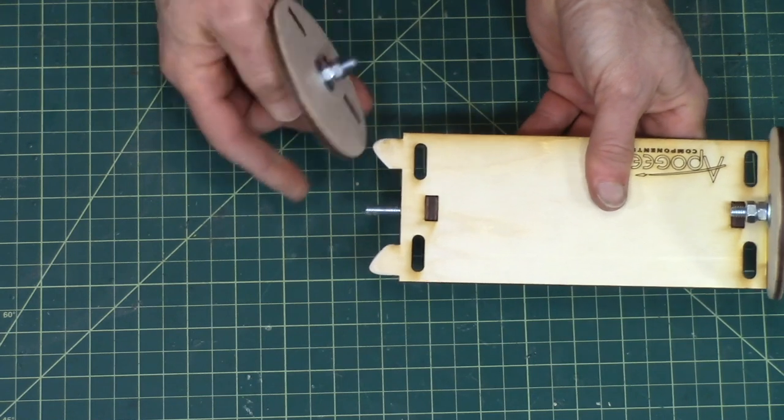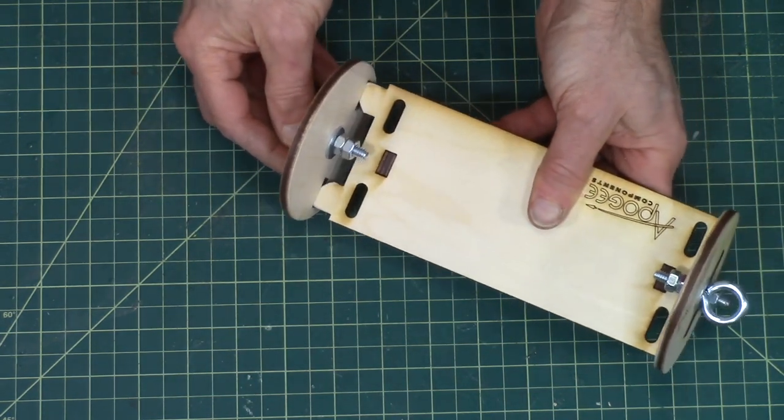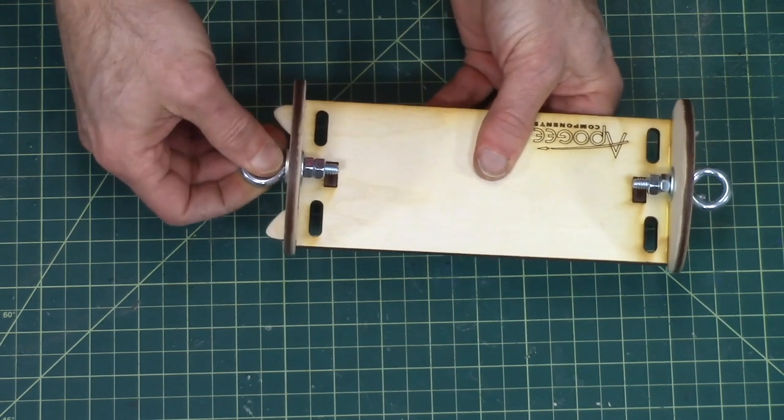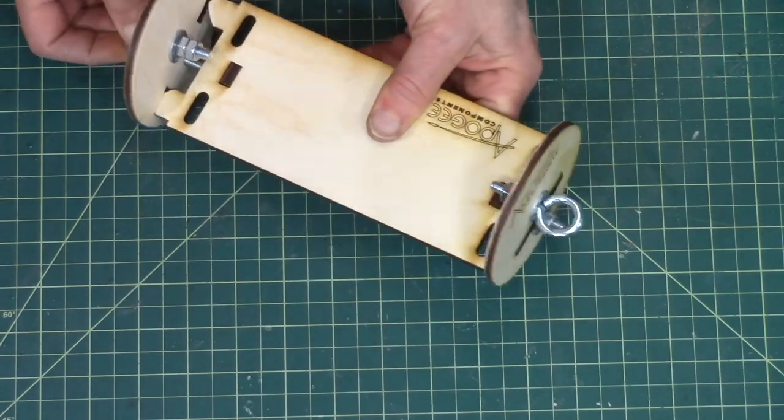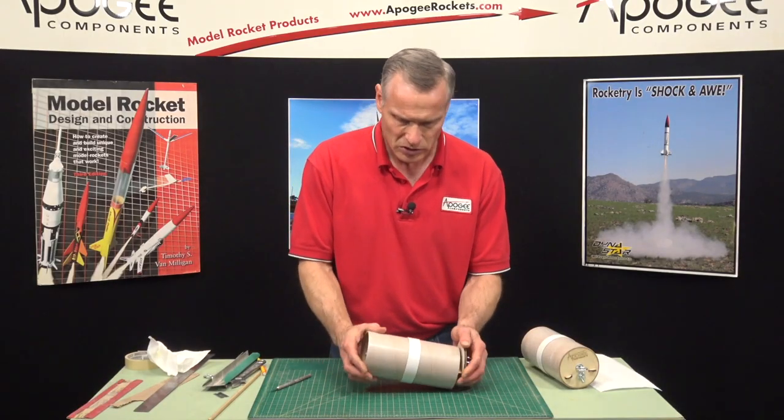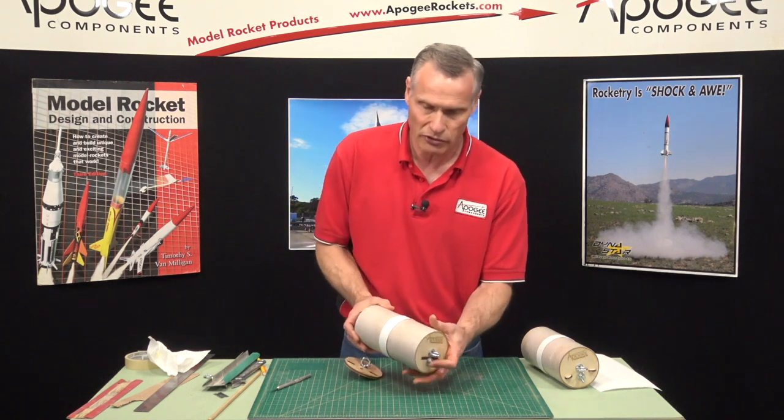So usually I have the bolt out furthest and it will go into the hole first, and then I can find the slots, and then everything is lined up and it prevents this from spinning. So when you put it into your tube, slide it in like that, and then you just hold this end with your finger.